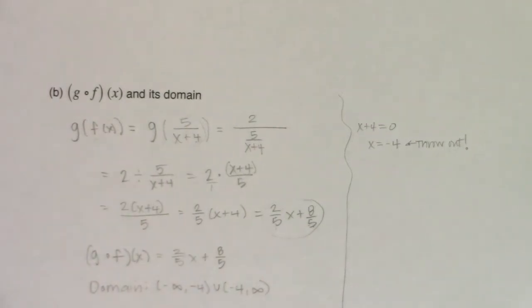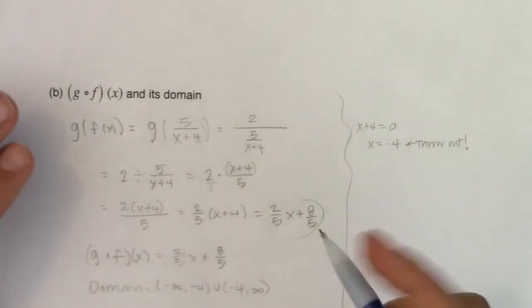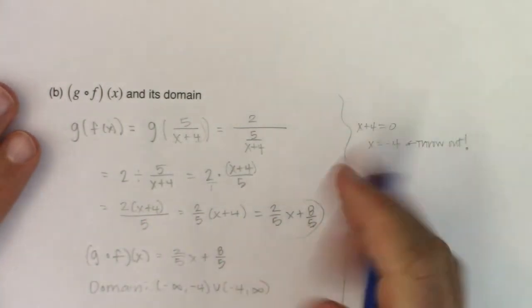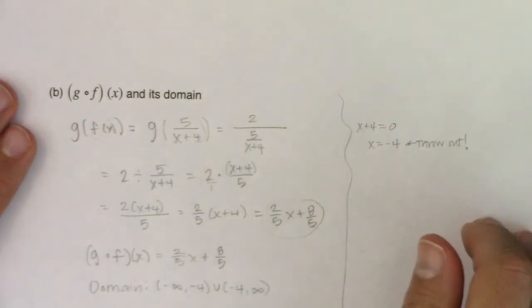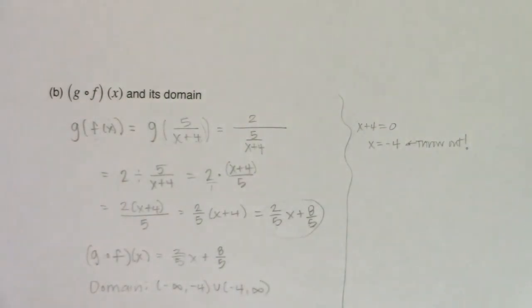So with that, we've taken a look at composing functions, whether it was g of f, f of g, and we talked about their domains. You start with the domain of the innermost function, start making your list, see what you can add after you add your outer function. So with that, we're going to work ourselves a little bit backwards. We're going to decompose some composite functions and that will round out section 3.3. So I'll see you in a few. Bye.